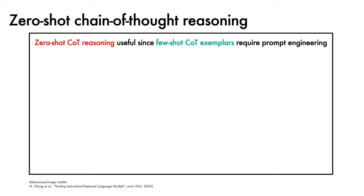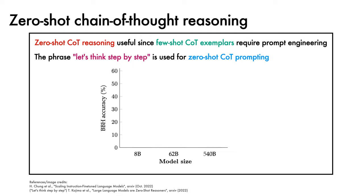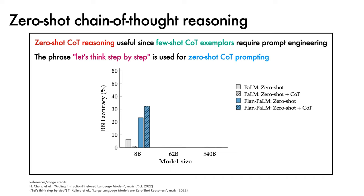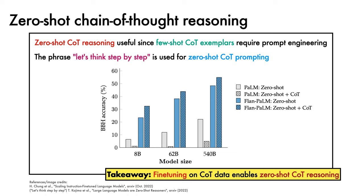For the next experiments, the authors note that zero-shot chain-of-thought reasoning is a particularly useful ability since finding good few-shot chain-of-thought exemplars often requires significant prompt engineering. Zero-shot chain-of-thought prompting is performed by inserting the phrase "let's think step-by-step" as a suffix into the prompt. For the 8 billion parameter model, relative to PaLM zero-shot, it is found that PaLM zero-shot with chain-of-thought prompting performs much worse. However, relative to Flan-PaLM zero-shot which has seen chain-of-thought instructions during fine-tuning, Flan-PaLM zero-shot with chain-of-thought prompting yields a boost. This trend is reflected both at 62 billion parameters and at 540 billion parameters. A takeaway is that fine-tuning on chain-of-thought data enables zero-shot chain-of-thought reasoning.